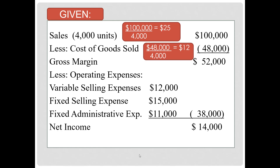We will also need to do this for any other cost deemed to be variable. Variable selling expenses are considered a variable cost: $12,000 divided by 4,000 units equals $3 per unit. We will not need to find a cost per unit for fixed costs because their totals will not change with activity, as long as this is within the relevant range.